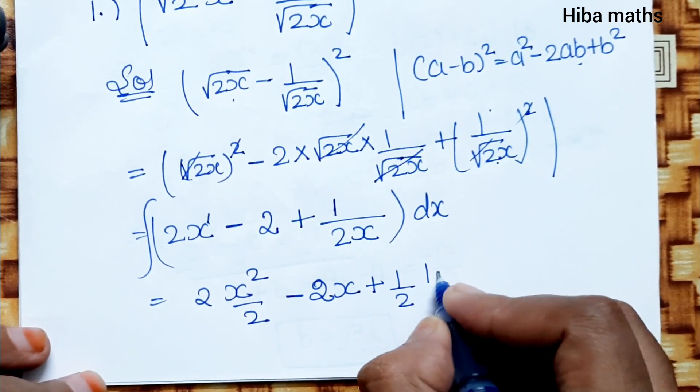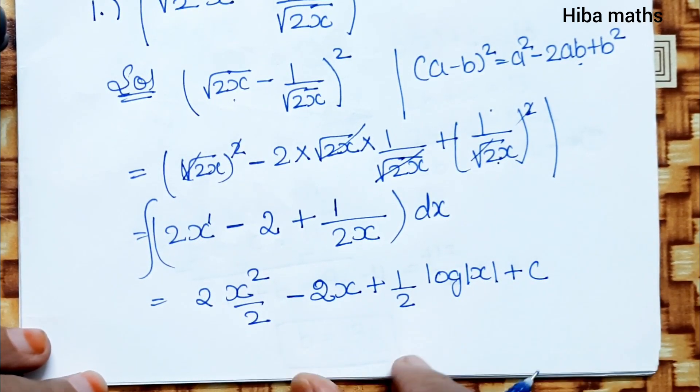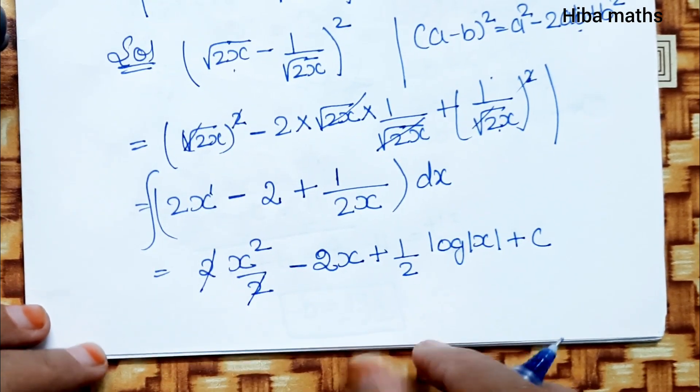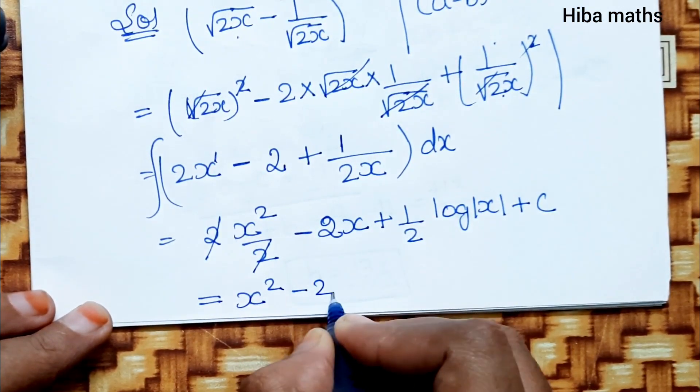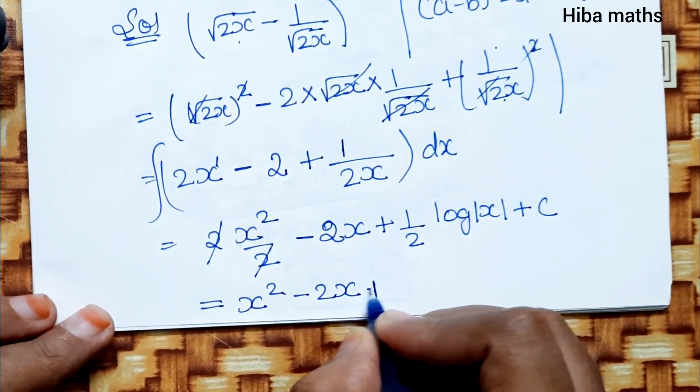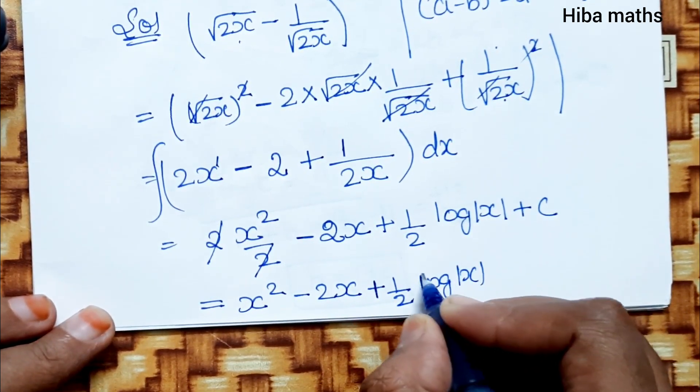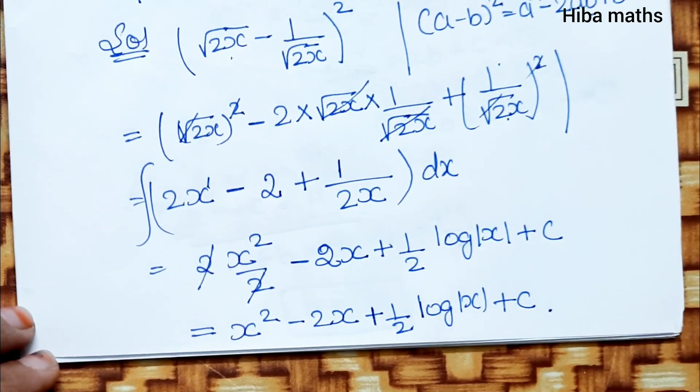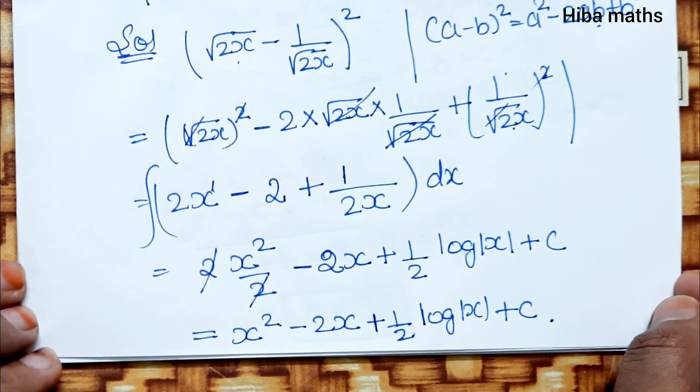1/(2x) integrates to (1/2)log|x|, plus C. The 2 cancels, so the final answer is x² - 2x + (1/2)log|x| + C. Now the answer is complete. Try it yourself. Thank you so much for watching.